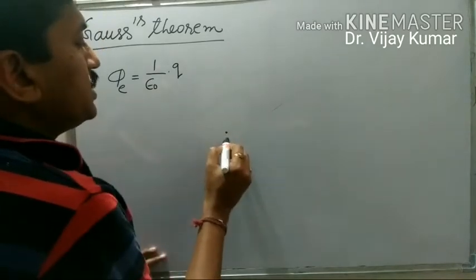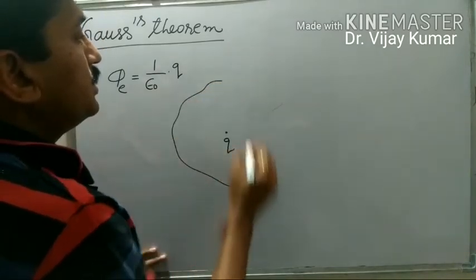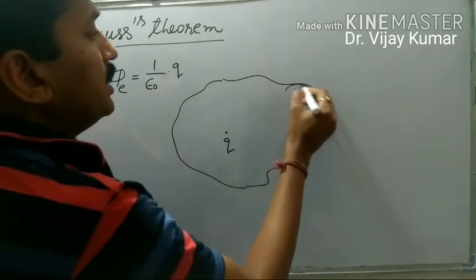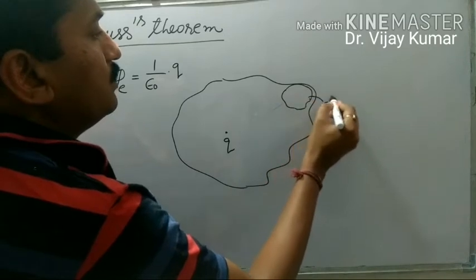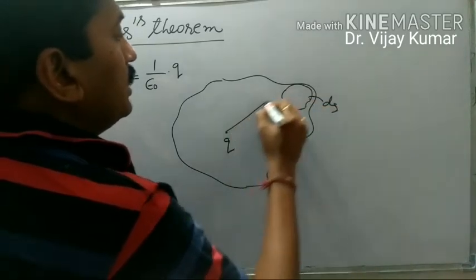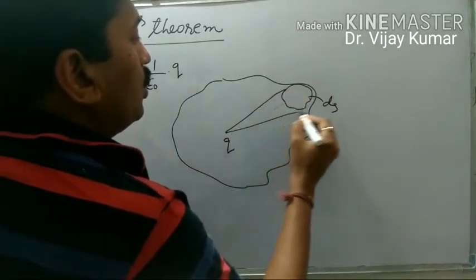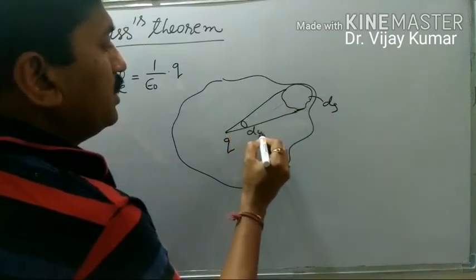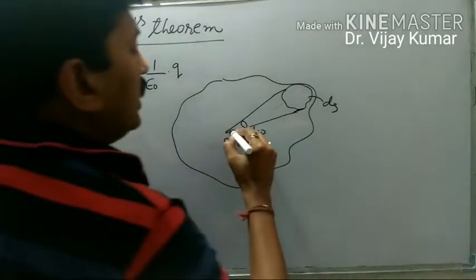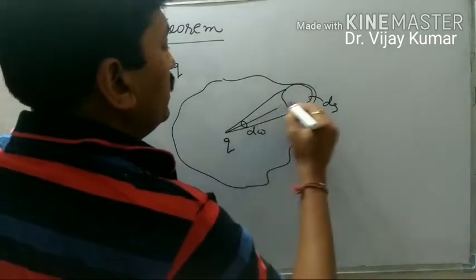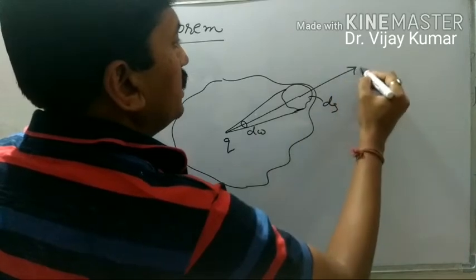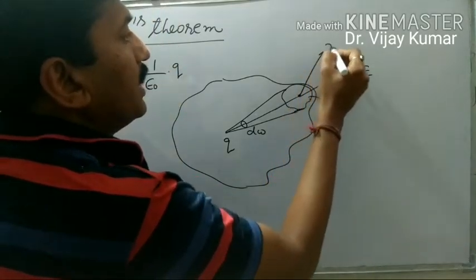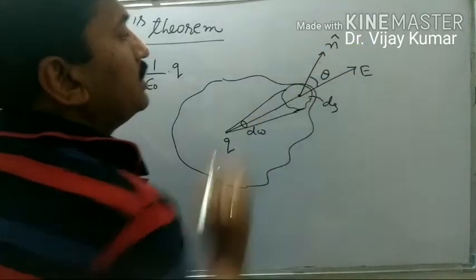Suppose this is a charge and this is a surface. We consider that there is a small surface element ds, and the solid angle sustained by this small surface we can represent by d omega. The direction of the electric field due to this charge particle is shown, along with the unit vector, and this angle is theta.